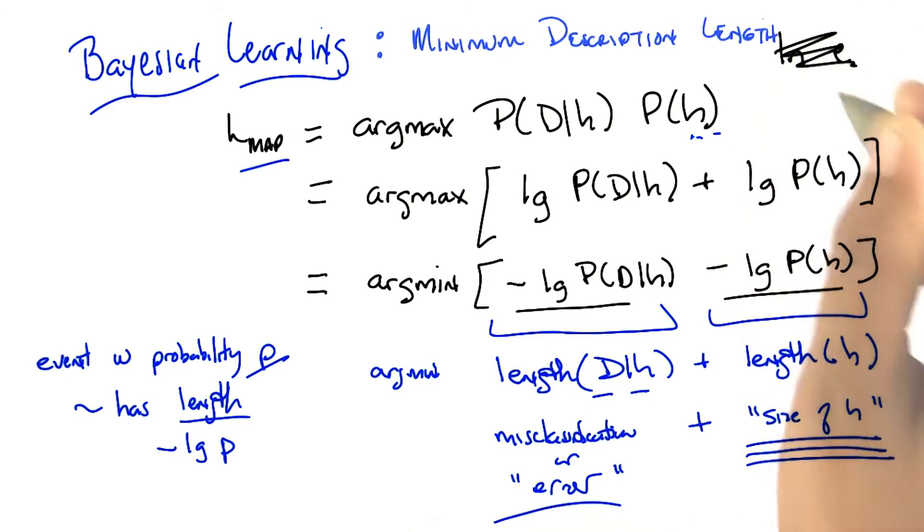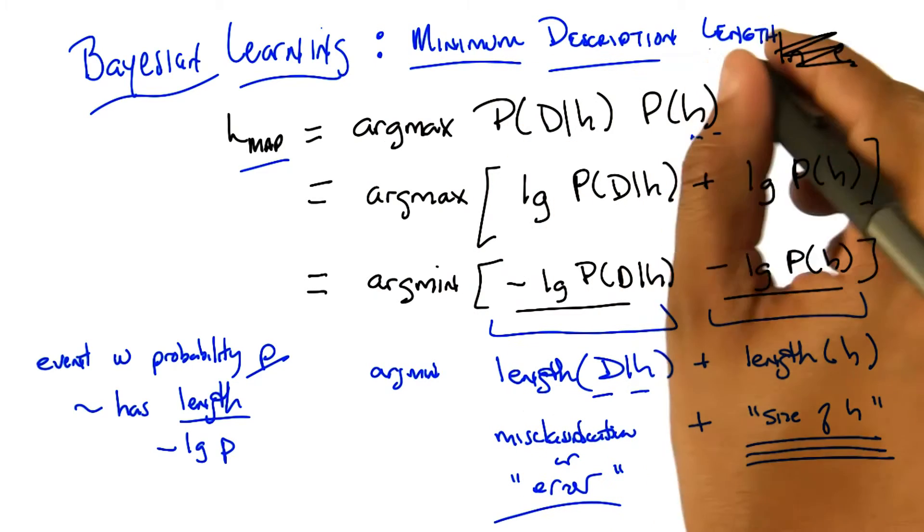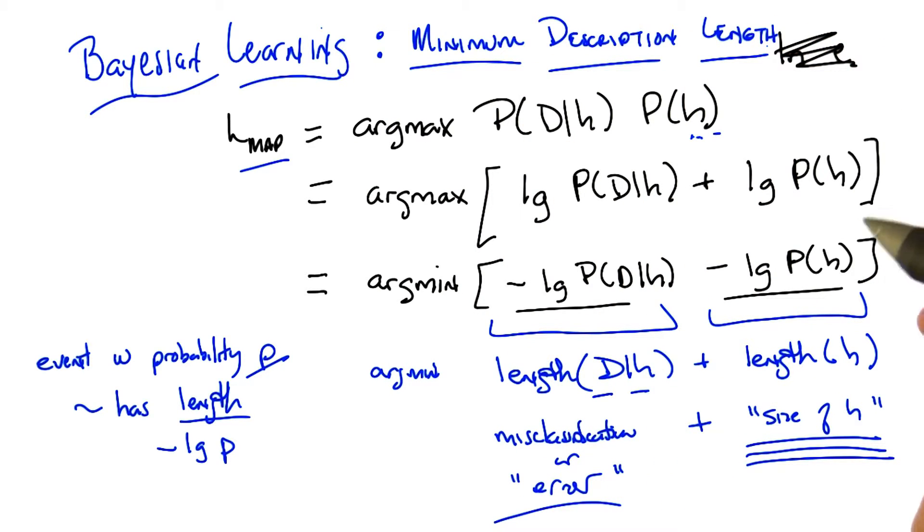You want to find the simplest hypothesis that still explains your data, that is minimizes your error. So this actually has a name, and that is the minimum description length. And there have been many algorithms over the years that have tried to do this directly by simply trading off some notion of error and some notion of size and finding the trade-off between them that actually works.